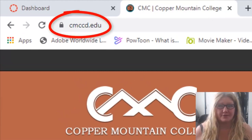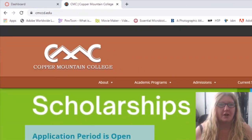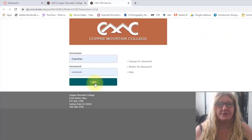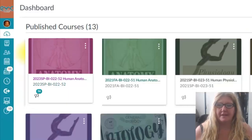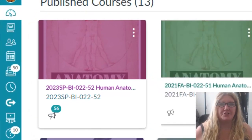When you go to the Copper Mountain College homepage, you can log in to your MyCMC portal here. Enter your username and password, then select Canvas. Then you can select the Biology 22 Human Anatomy course.